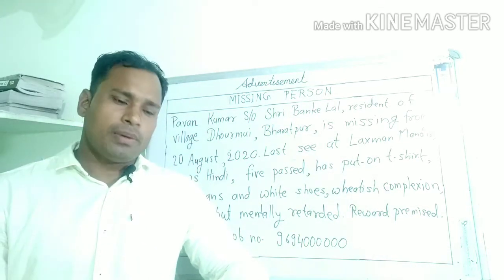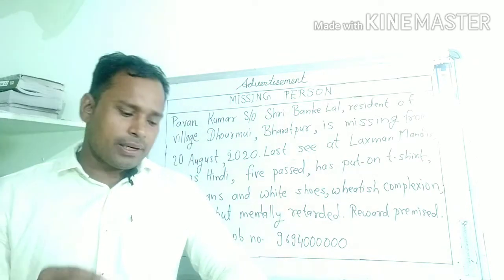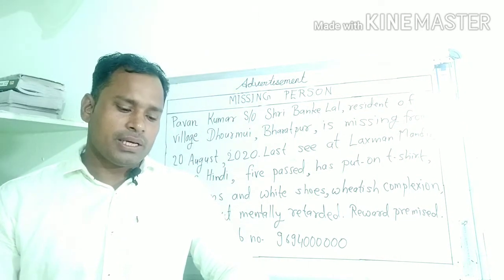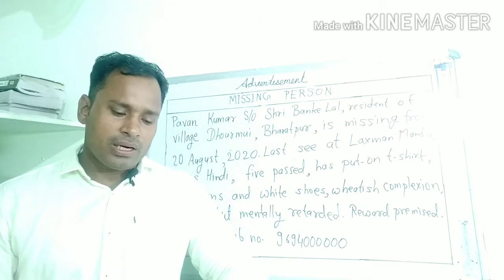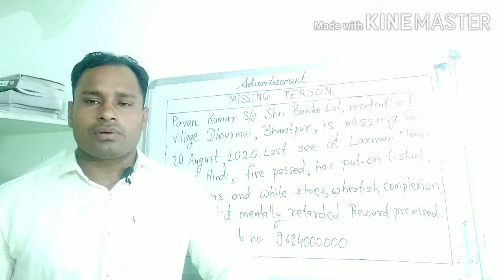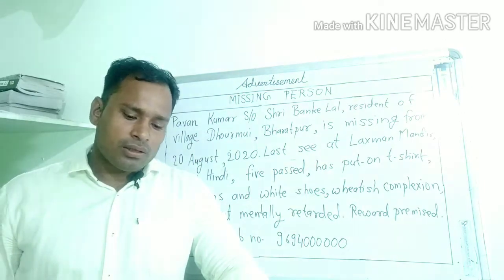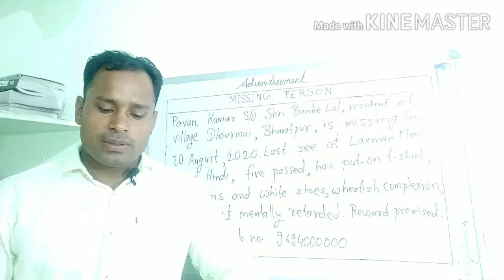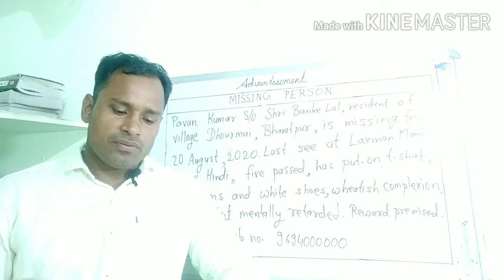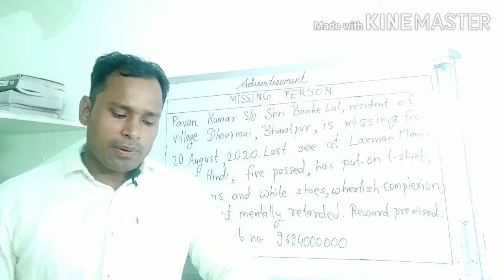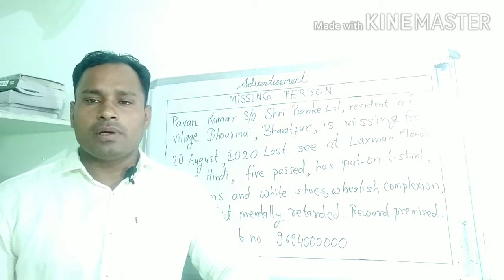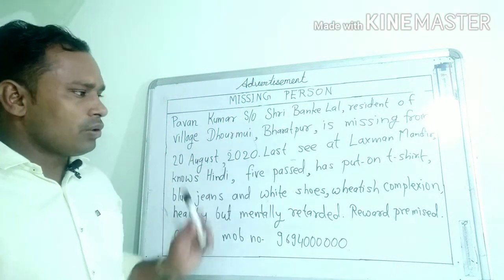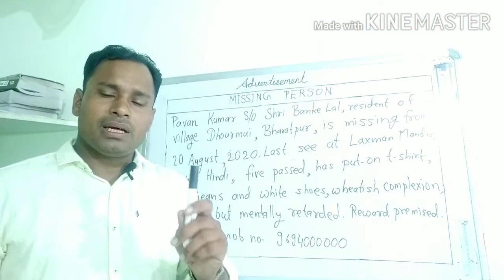Missing Person के लिए question इस प्रकार आएगा: Your brother is missing — आपका भाई गायब हो गया है (या किसी भी relative का नाम हो सकता है)। You have lodged an FIR in Chiksana Police Station, Bharatpur. Write a classified advertisement to get it published in a newspaper.